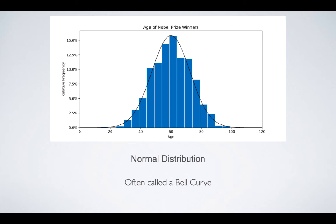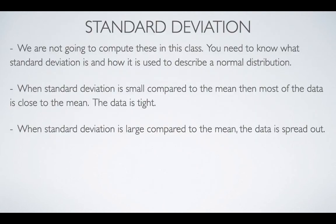We'll be looking at other distributions tomorrow. So, standard deviation — we're not going to go into how to compute these in this class, but you need to know what the standard deviation is and how it is used to describe a normal distribution. When standard deviation is small compared to the mean, the majority of the data is very close to the mean and the data is tight. When standard deviation is large compared to the mean, that means the curve is more spread out and it's a flatter curve.